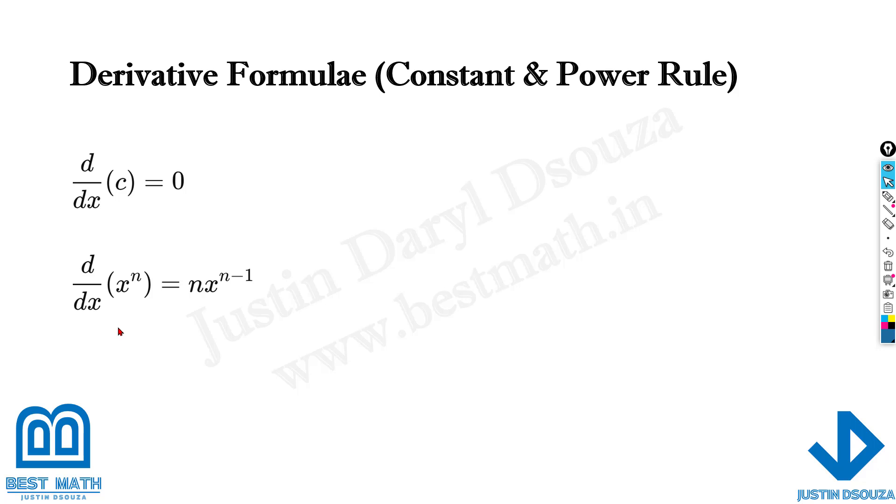If it's any constant term it becomes zero. The power rule says the power comes down as the coefficient and is subtracted by one. If it is x to the power four, it will be 4x to the power three.